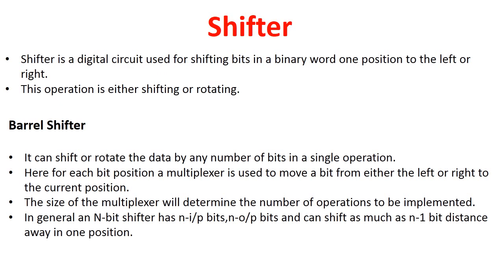That size of multiplexer will determine the number of operations to be implemented. In general, an n-bit shift register will have n input bits, n output bits, and it can shift as much as n minus 1 bit distance in one operation. It will have n input and output combinations and the number of bits that can be shifted will be n minus 1.